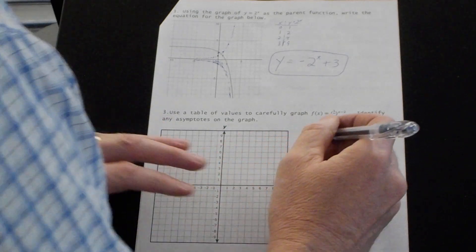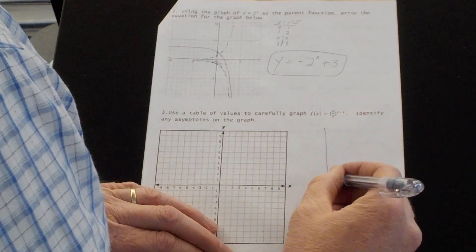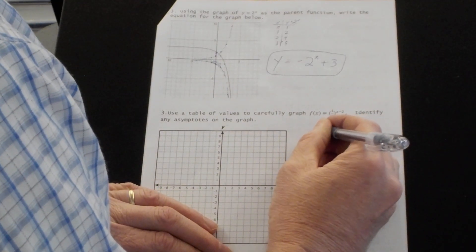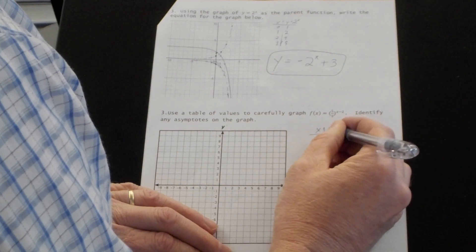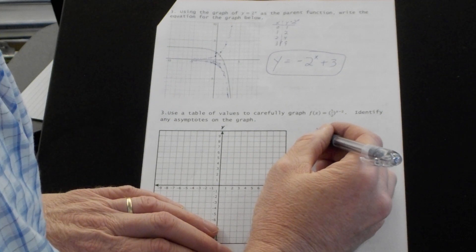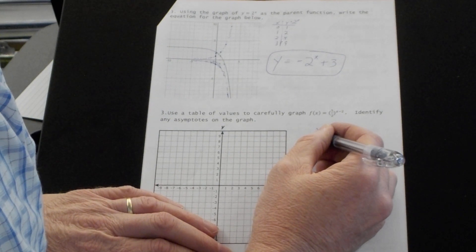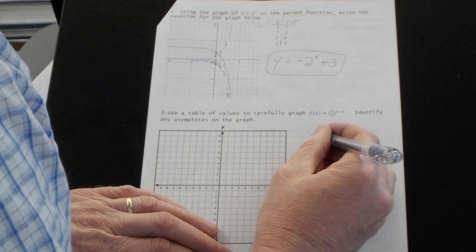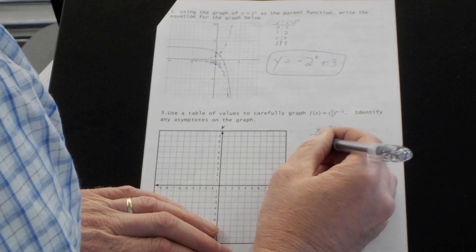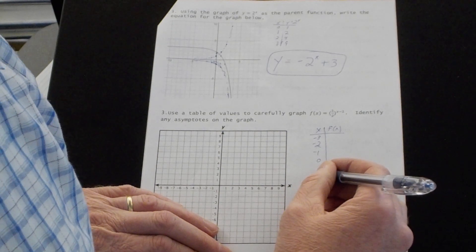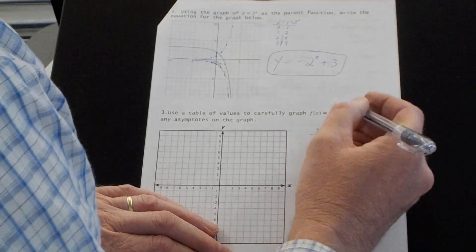Number four, use a table of values to carefully graph y equals one half to the x minus two. I'll start at negative three, negative two, negative one, zero, one, two.